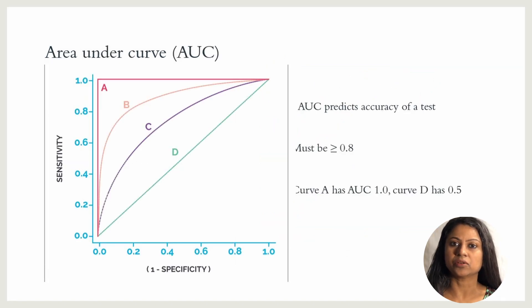The area under ROC curve is called AUC. AUC can be used to predict the accuracy of a test. Generally, an AUC of 0.8 or more is seen in a good test. A test with an AUC which is equal to or less than 0.75 is not a clinically useful test.